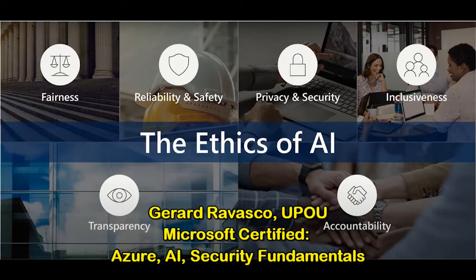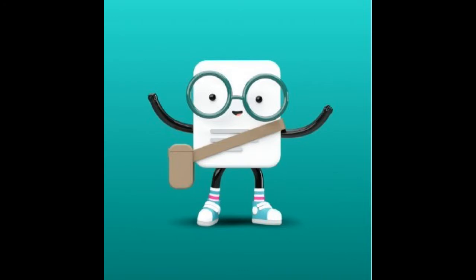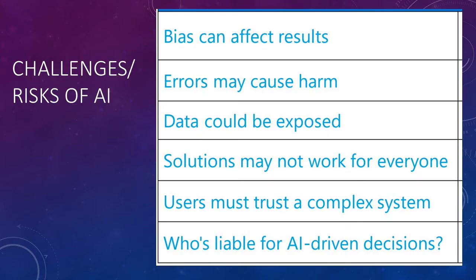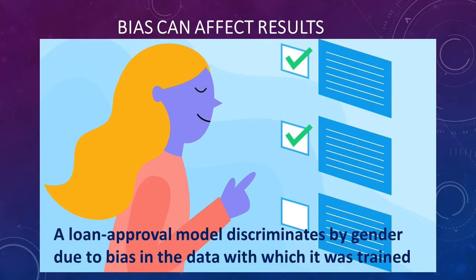Six guiding principles for artificial intelligence ethics. Artificial intelligence is a powerful tool that can be used to greatly benefit the world. However, like any tool, it must be used responsibly. In doing so, we have to understand the challenges and risks associated with artificial intelligence.